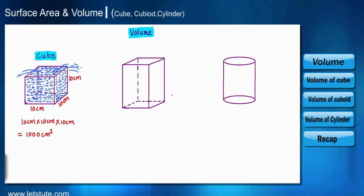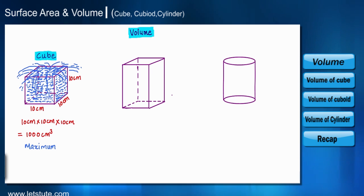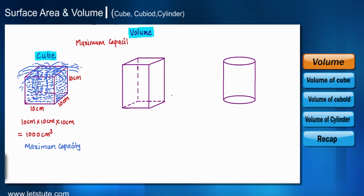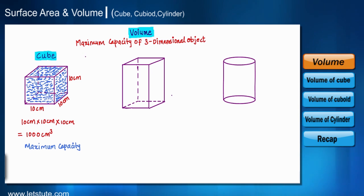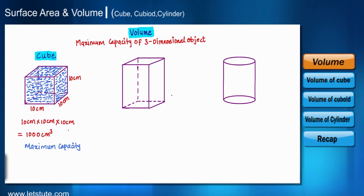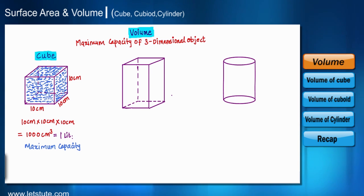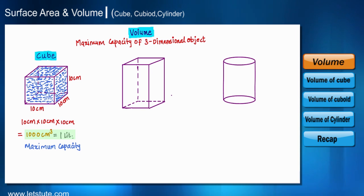If we add more water to this container, it will spread out. That means the maximum capacity of this container is 1000 cubic centimeter only. The capacity of any three-dimensional container is called the volume of that container. Water or any liquid is most often measured in liters, and 1000 centimeter cube equals 1 liter. So the volume of a cubical container having 10 centimeter of length is 1000 centimeter cube or 1 liter.